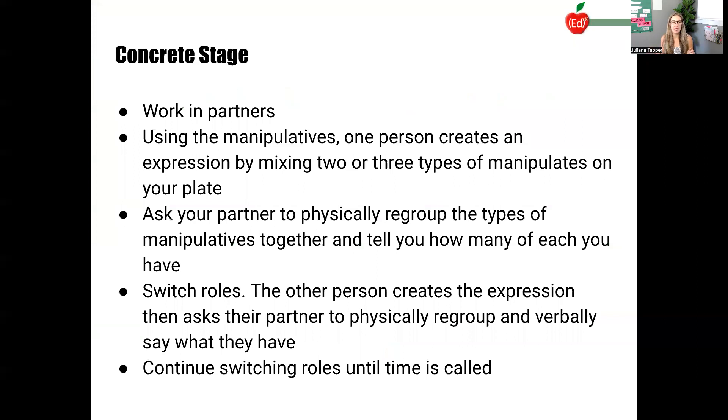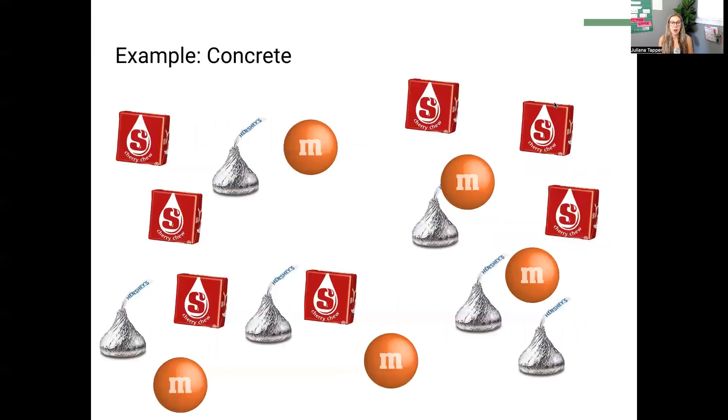So this is what I would explain to the students. So in our concrete stage, we're going to work in partners, using the manipulatives. One person creates an expression by mixing two or three types of manipulatives on your plate. Ask your partner to physically regroup the types of manipulatives together and tell you how many of each you have and then switch roles. So the other person will create the expression and then ask their partner to physically regroup and verbally say what we have. Continue switching roles until time is called.